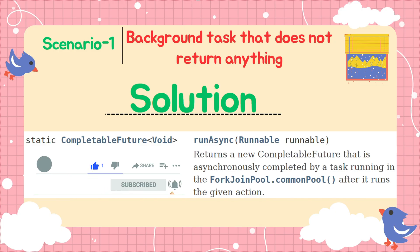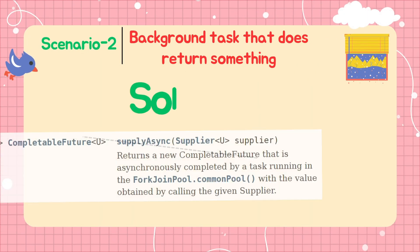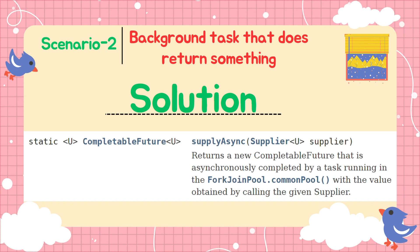This was the scenario where the task is not returning anything. But if the task needs to return something — similar to a Callable implementation — that is our second scenario. For such cases, CompletableFuture provides another static method: supplyAsync(). This method takes a Supplier as an argument, returns a CompletableFuture of that same type, and also uses ForkJoinPool's common pool for picking up the thread.